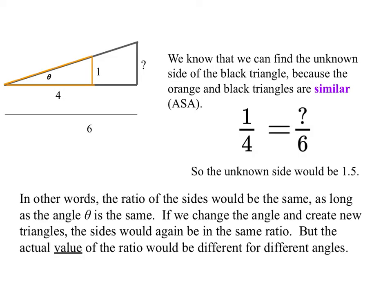Consider two triangles, an orange triangle and lying under it a black triangle. They're both right triangles and they share this angle, which I'm calling theta. I haven't told you the angle, but they have the same angle. And we know that we can find the unknown side of the black triangle because the orange and black triangles are similar via angle-side-angle.